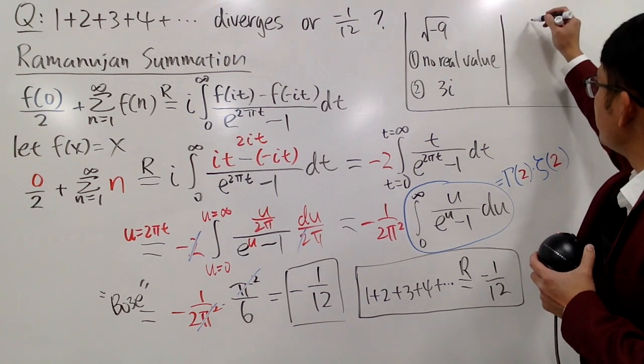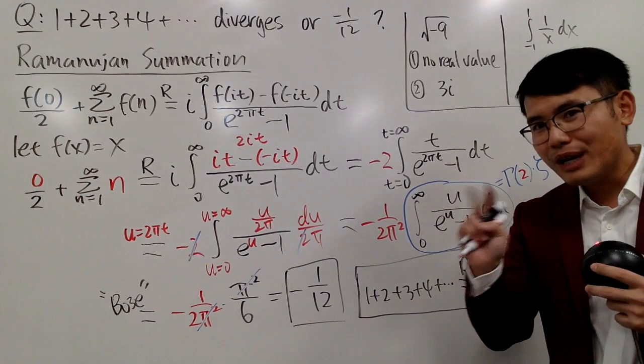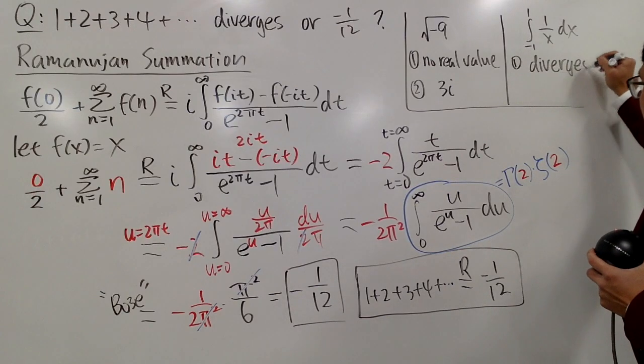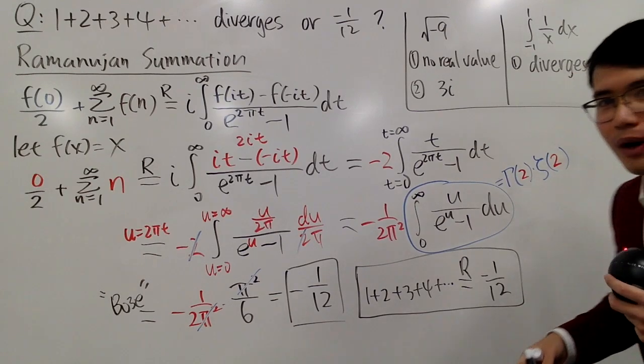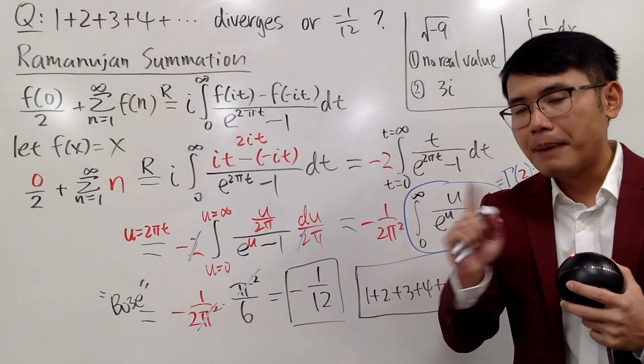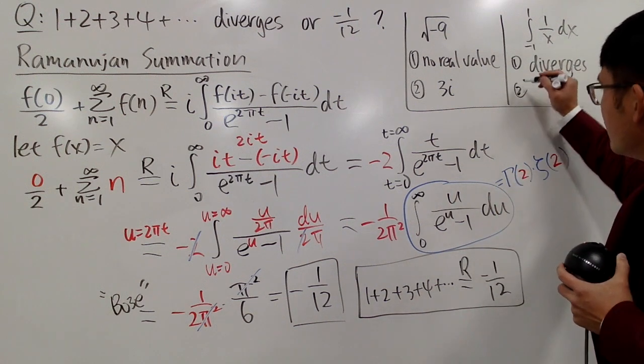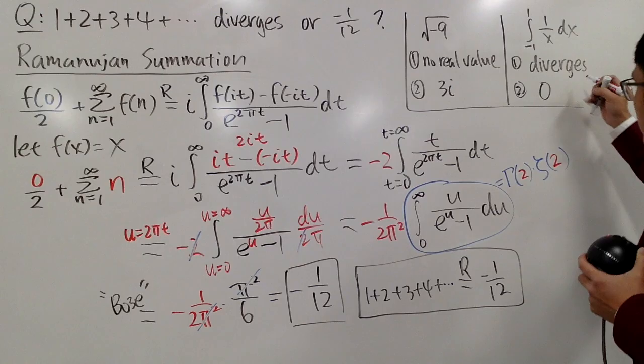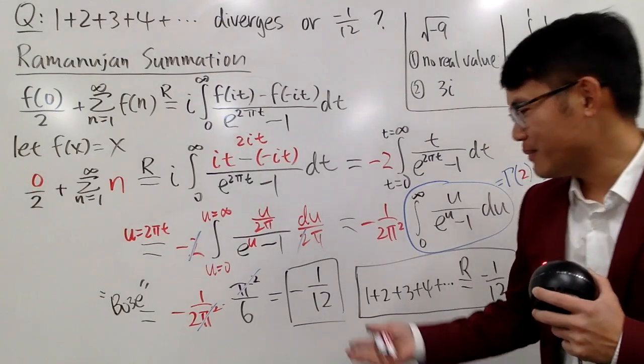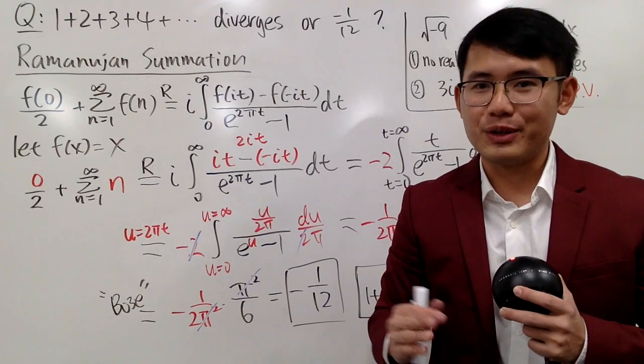However, once you learn about complex numbers, you can say this is equal to 3i, just the principle value. Some people may argue this is plus minus 3i, up to you. So it depends on which class that you are in, which math you have seen. And another example I want to give you, in fact, I have a video on this, is that the integral from negative 1 to 1, 1 over x dx. For this, we also have two ways to answer it. The first way is that we can simply say this improper integral diverges. And you can check out my other video for this as well. That's good for Calc 2 students.